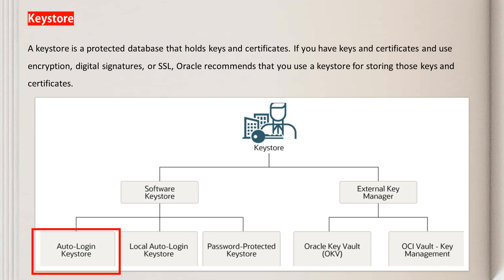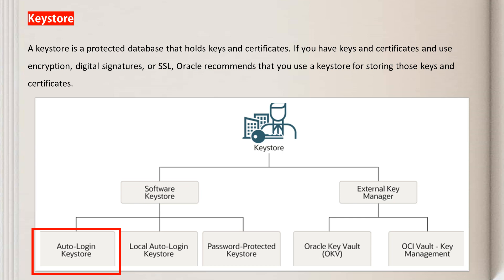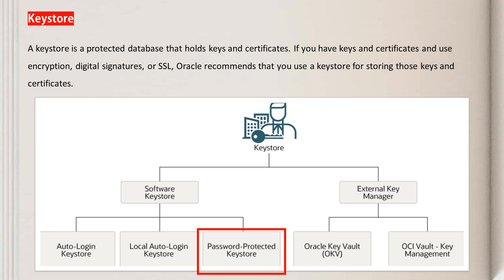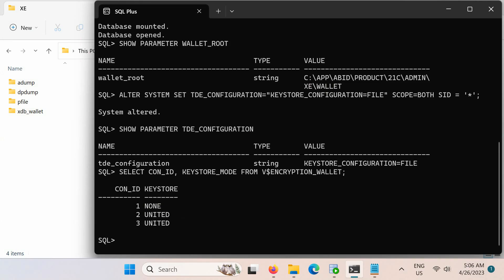Both auto-login and local auto-login software keystores are automatically opened when accessed. The auto-login software keystore can be opened from different computers from the one where the keystore resides, but the local auto-login software keystore can only be opened from the computer on which it was created. Password-protected software keystores are protected by a password that you create, and you must explicitly open this type of keystore by specifying the password before the keys can be retrieved or used.